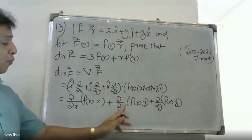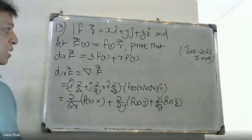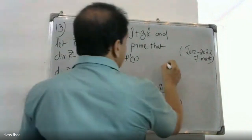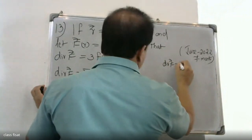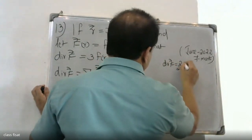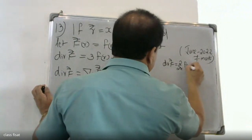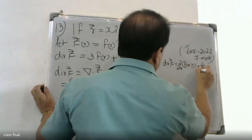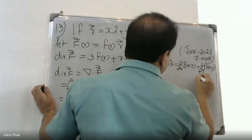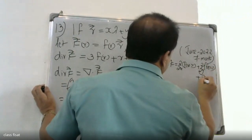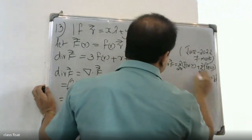So the divergence becomes ∂/∂x of f(r)·x plus ∂/∂y of f(r)·y plus ∂/∂z of f(r)·z.